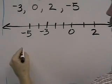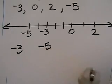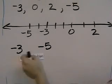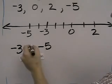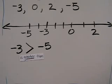For example, if I wanted to say negative three and negative five, how do they compare? Well, negative three is greater than negative five. So we would use this symbol. Negative three is greater than negative five.